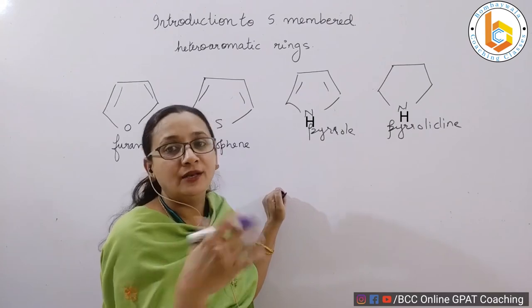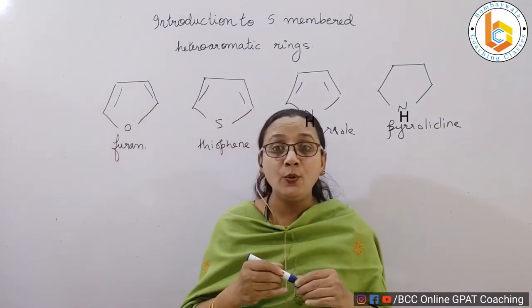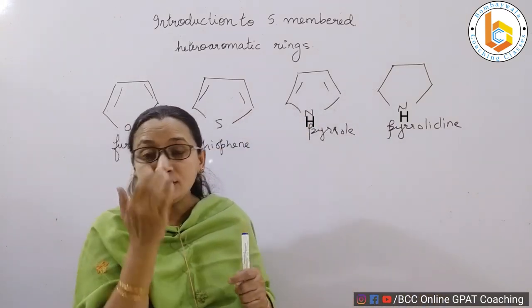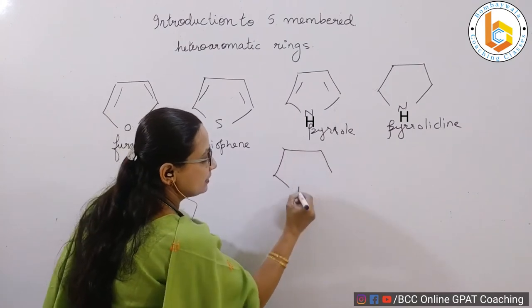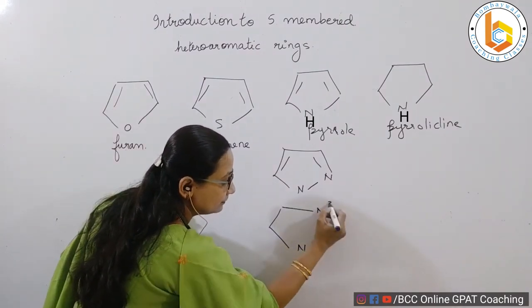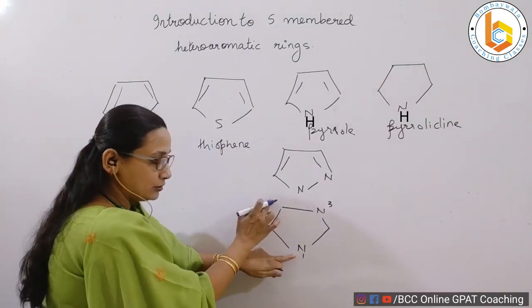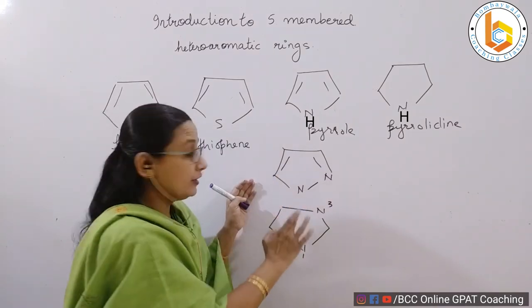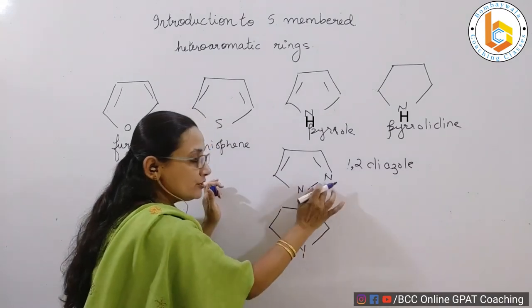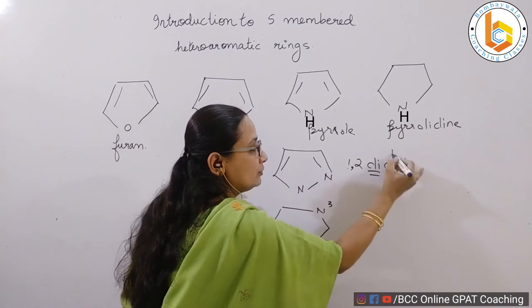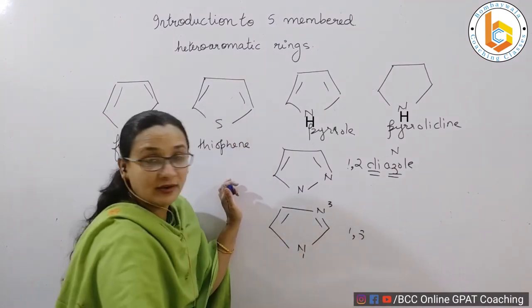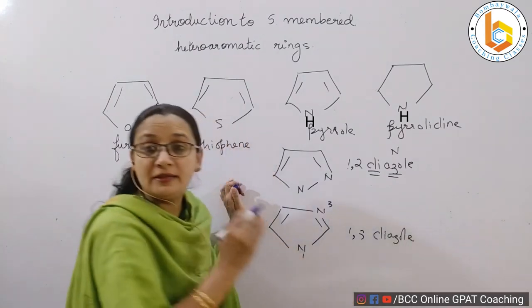We have seen the four five-membered rings containing only one heteroatom: furan, thiophene, pyrrole, and pyrrolidine. Now let us look at five-membered rings containing two nitrogens. A five-membered ring containing two nitrogens at the one and two position with aromaticity is called 1,2-diazole, also known as pyrazole. A five-membered ring containing two nitrogens at the one and three position with aromaticity is called 1,3-diazole, also known as imidazole.